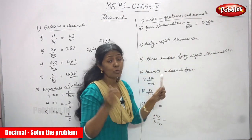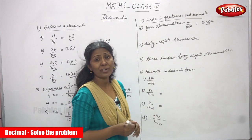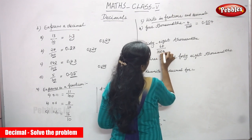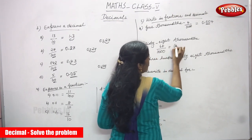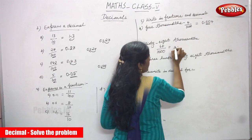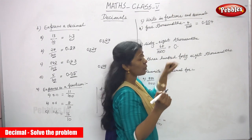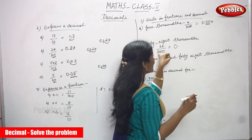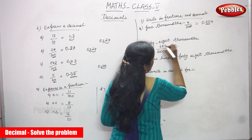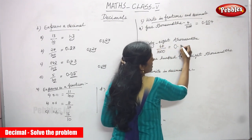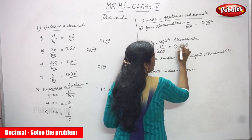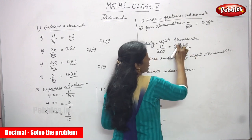Next is 68 thousandths. Write in standard form: 68 by 1000 as a fraction. First write 0, then put a point. In 1000 there are 3 zeros, but the numerator has only 2 digits, so you need 1 more zero. Write 0 after the point, then 6, then 8. The answer is 0.068.